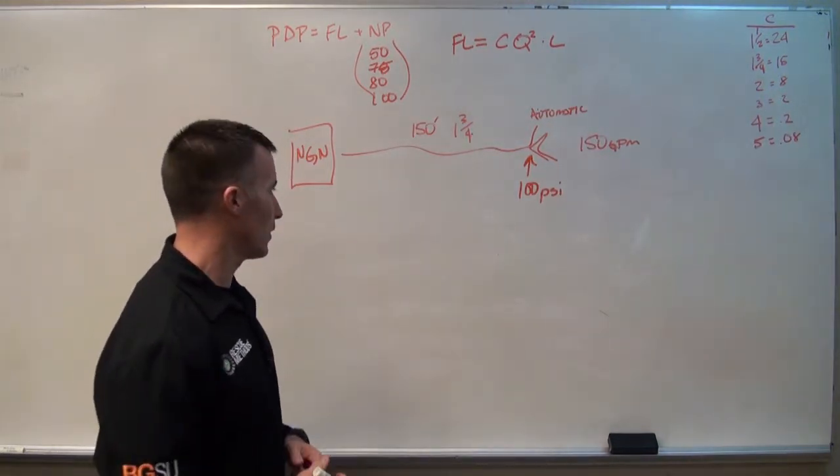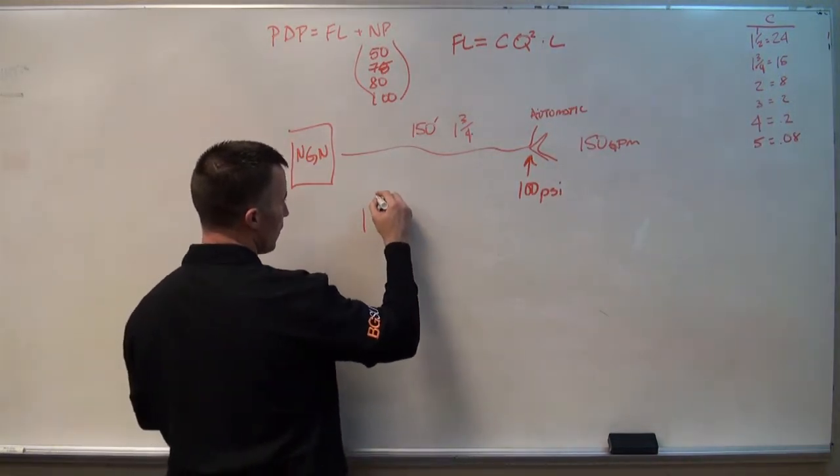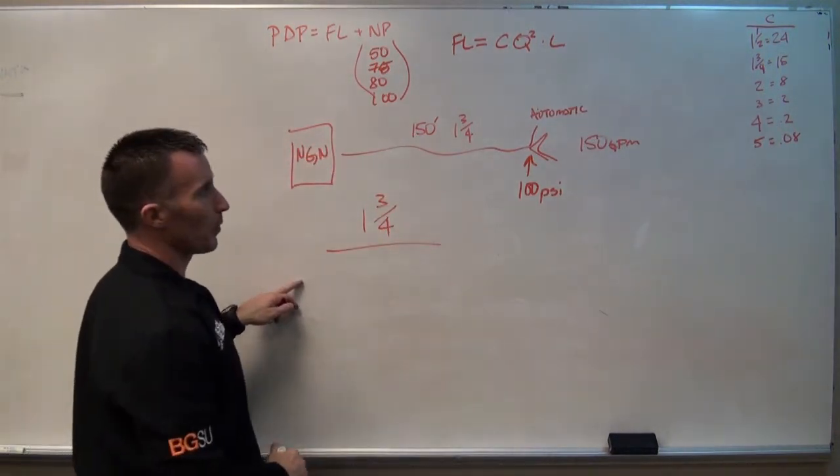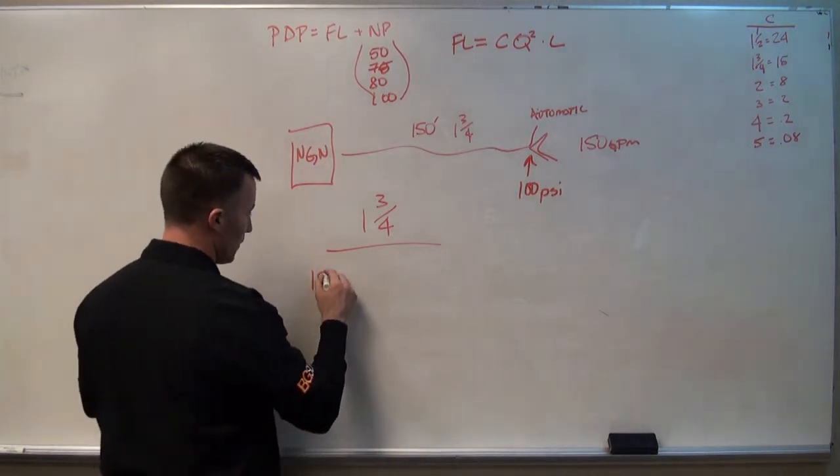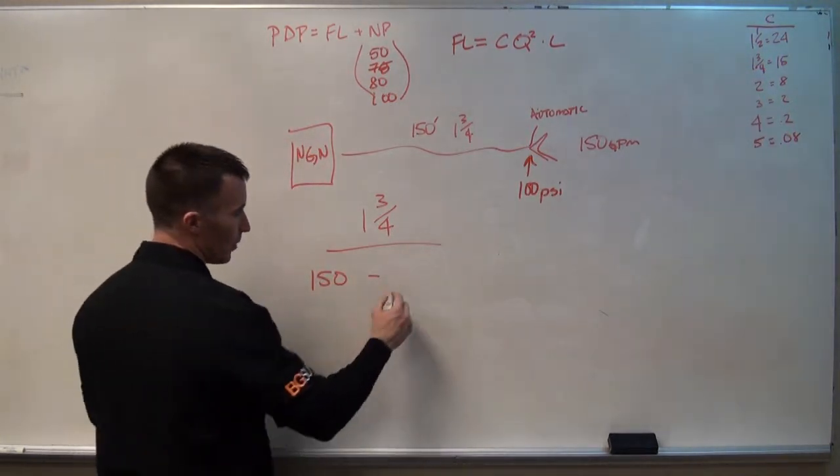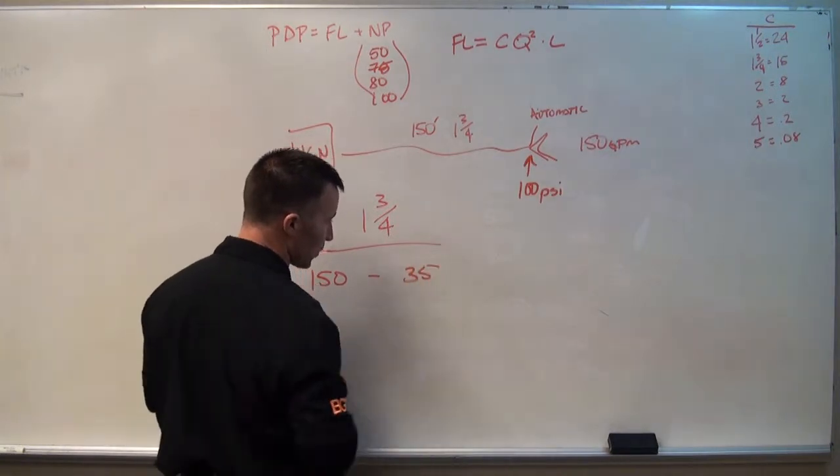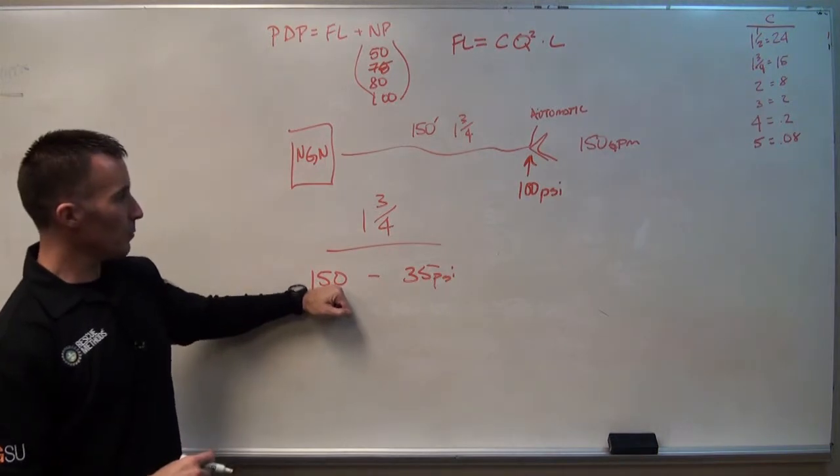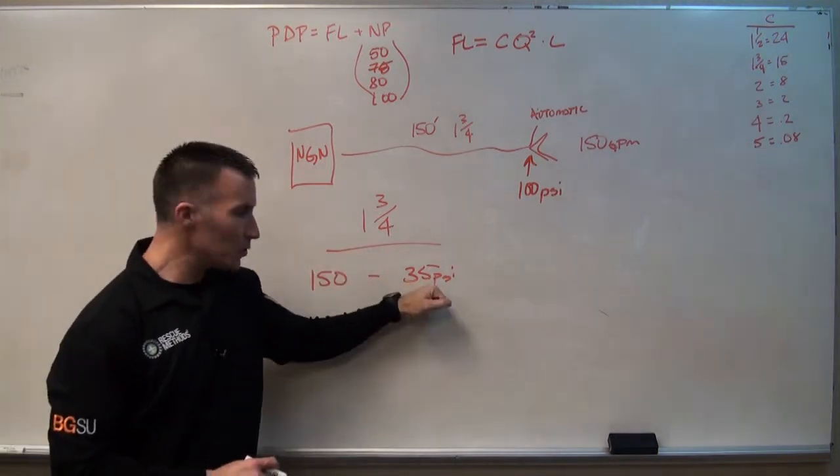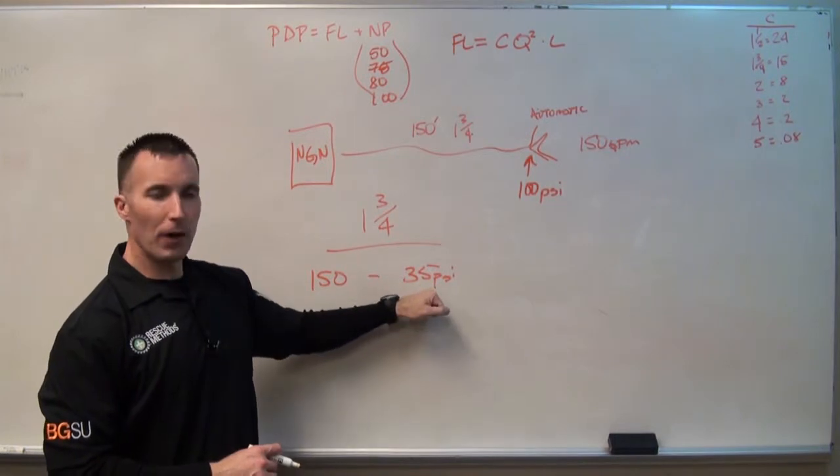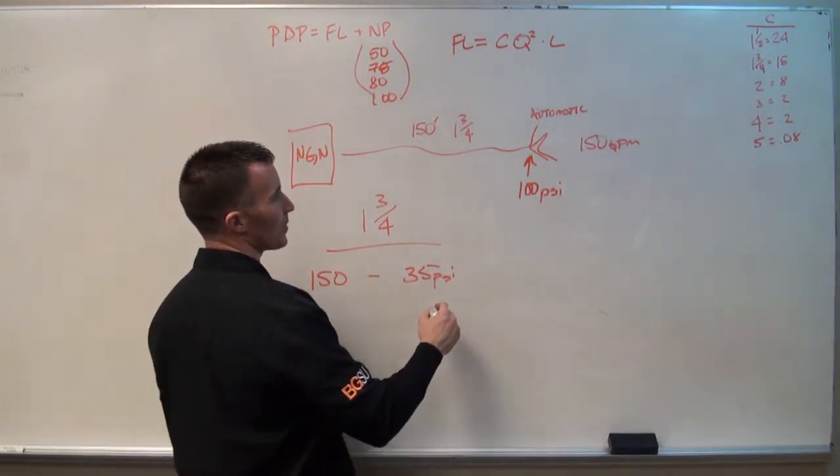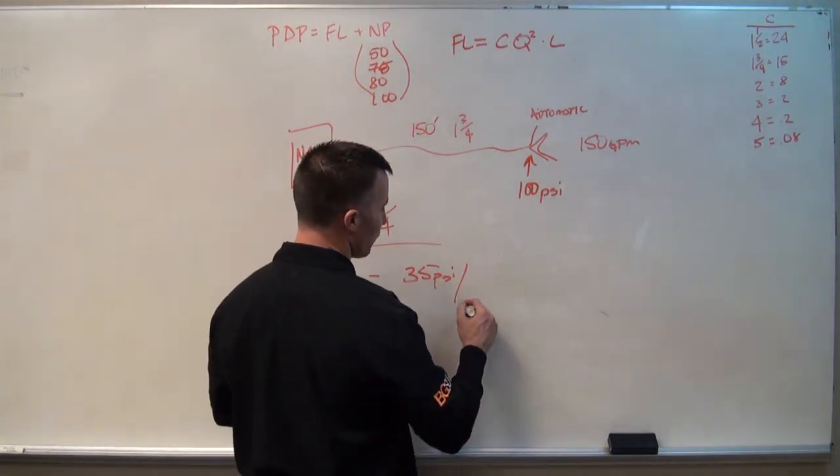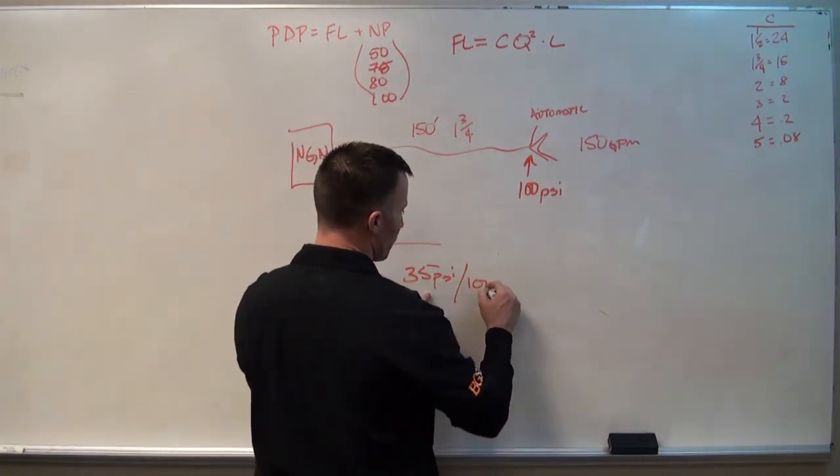If you'd like me to put that into English, what I'm saying is, for inch and three quarter hose, we just did an example at 150 gallons a minute. We know that's going to end up generating 35 PSI of friction loss. At 150 gallons a minute through inch and three quarters, you're always going to come up with 35 pounds, because you're always utilizing the same coefficient. The only thing that changes is your length. So that's 35 PSI per 100 feet.